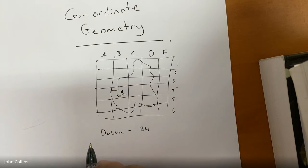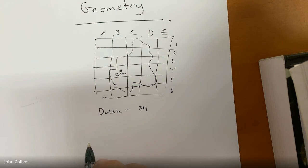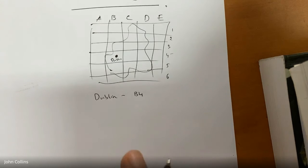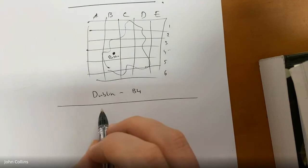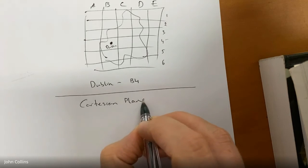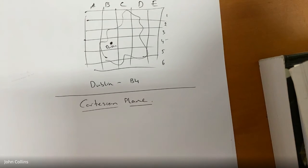Often this is used in things like orienteering or just general map reading. So if you've ever done orienteering, perhaps you came across this. But this is the humanities version. Now, in maths, we take it a step further than that. And we do something called the Cartesian plane.